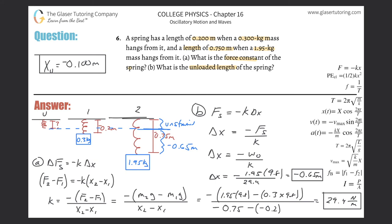Technically the negative sign just indicates direction — I took my zero point at the top where the spring hangs from. If someone asks for the unloaded length as a scalar, it's simply 0.1 meters, since length isn't technically a displacement. So the unloaded length is 0.1 meters. Hopefully that helps — please subscribe and tell your friends if this video helped you out.